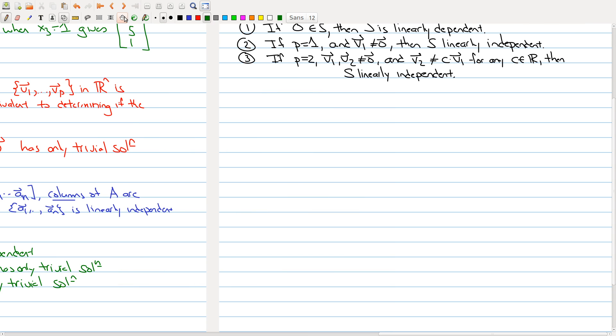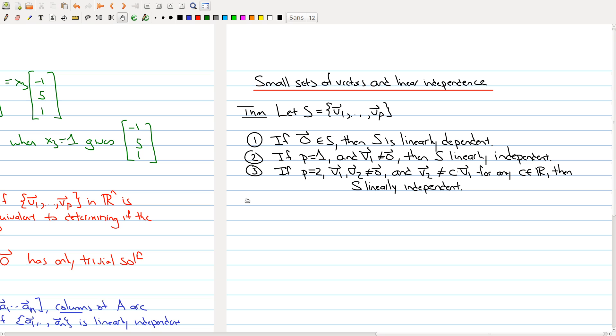On the next page, what I have is a statement about small sets of vectors and linear independence. The question is if I hand you a set of vectors, can you easily determine whether the set of vectors is linearly independent or not. This theorem gives you some special cases in which you can say yes or no about linear independence.